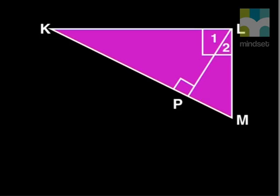First, we need to construct a line LP that intersects KM at 90 degrees at P. Have a look at the diagram. Can you see a way of showing that the two small triangles, KLP and LPM, are similar to the big triangle, KLM?